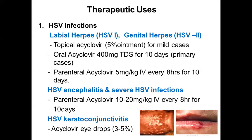The therapeutic uses include HSV infections. HSV1 infections cause labial herpes — the lesion on the lip — or genital herpes by HSV2, with lesions on the shaft of the penis. Topical acyclovir 5% ointment can be used for mild cases. Oral acyclovir 400 mg three times daily for 10 days is used for primary cases, and for recurrent or severe cases, parenteral acyclovir 5 mg/kg IV every eight hours — three times — for 10 days.